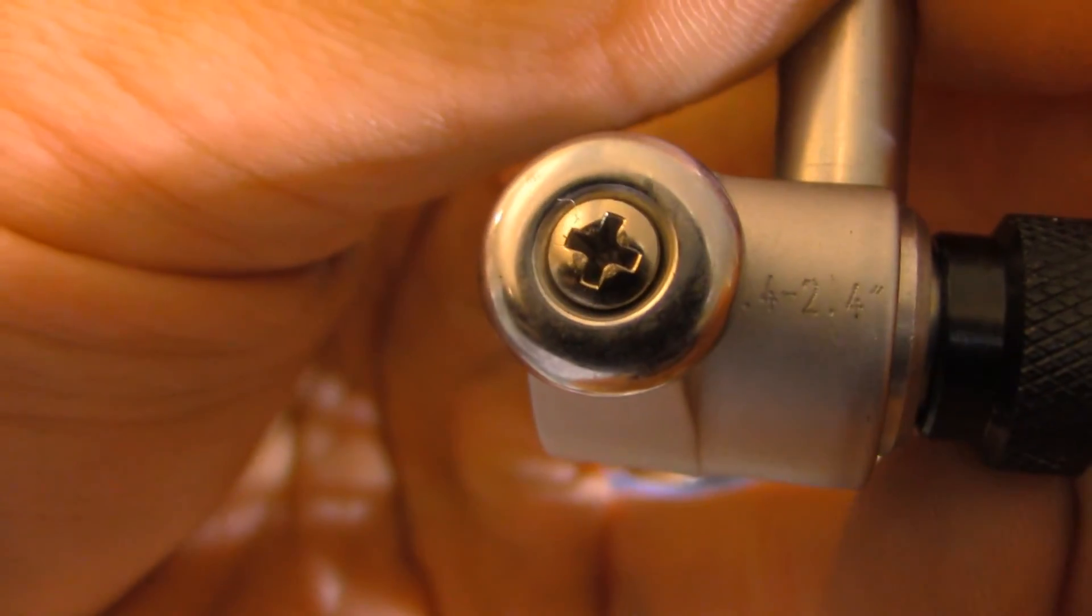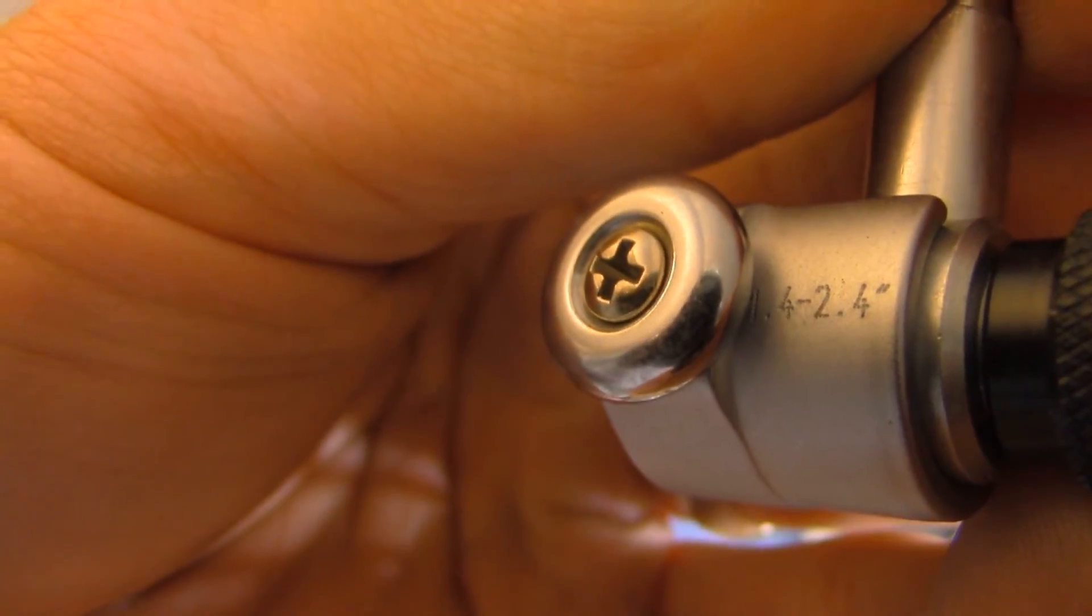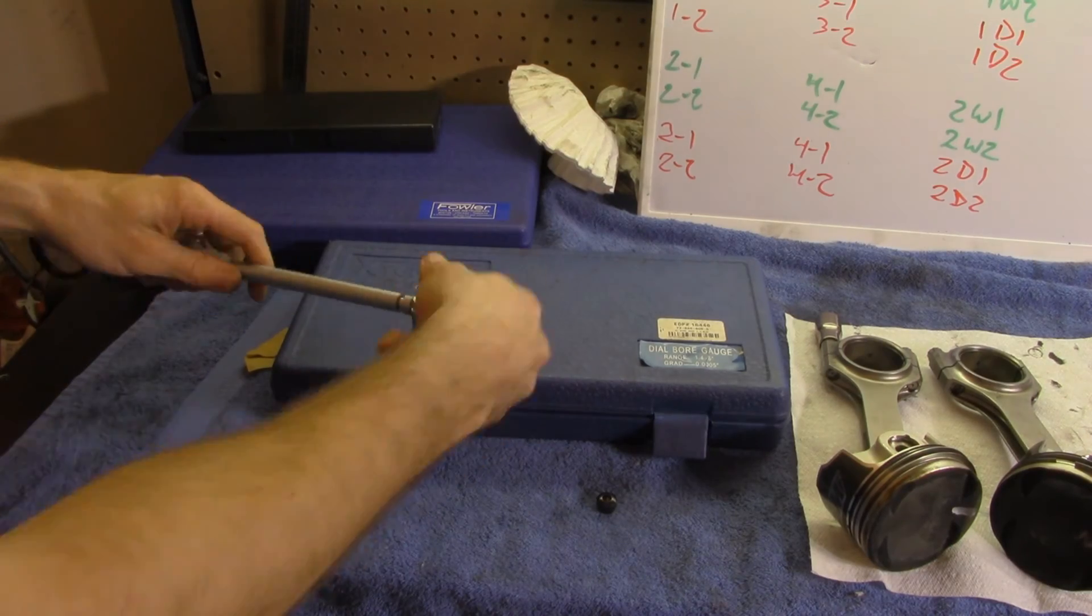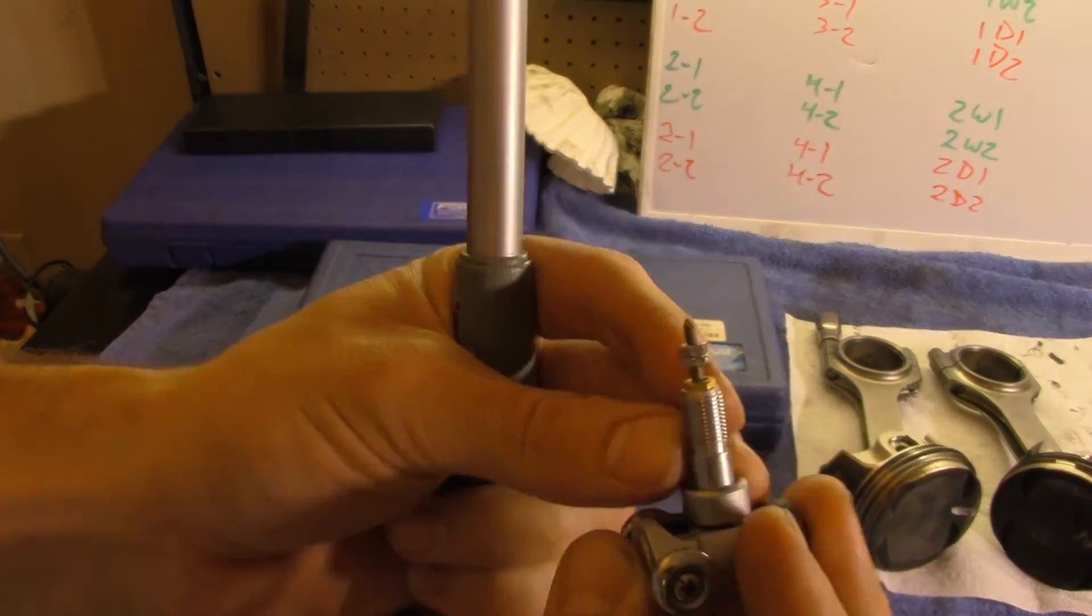If you need to utilize the 1.4 to 2.4 inch range, you will need to swap the measuring heads. This is easily accomplished by screwing off the old head, swapping the spacer, and screwing the new head into place.